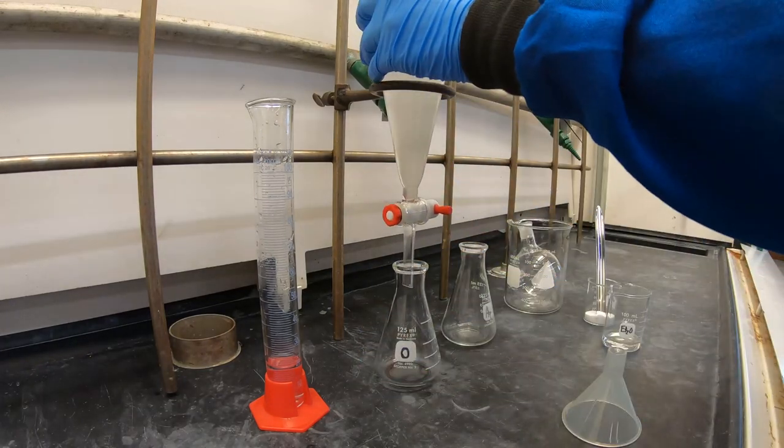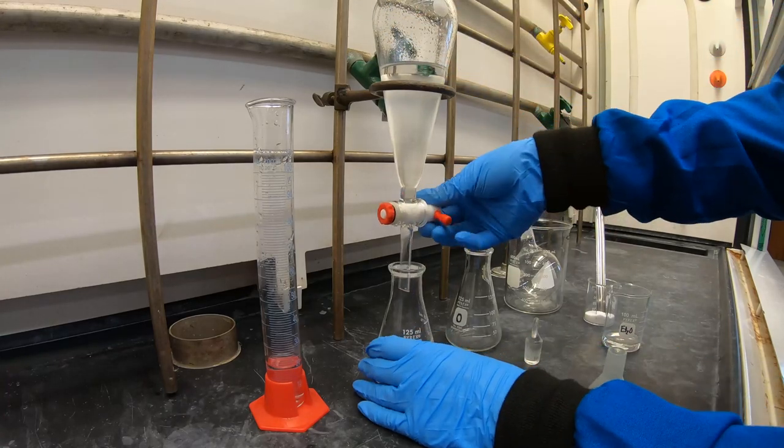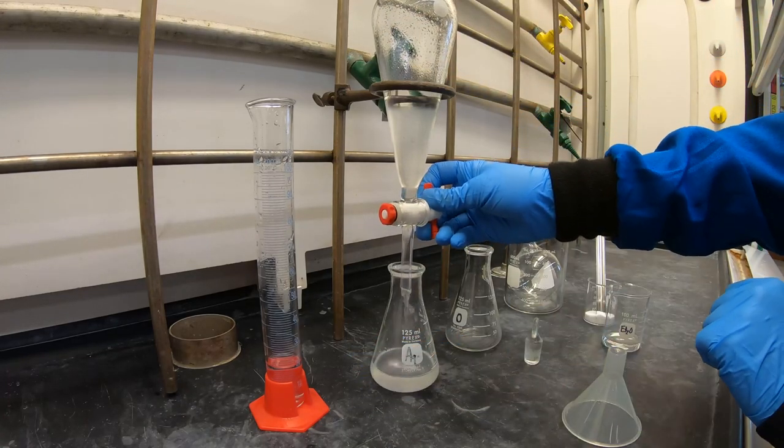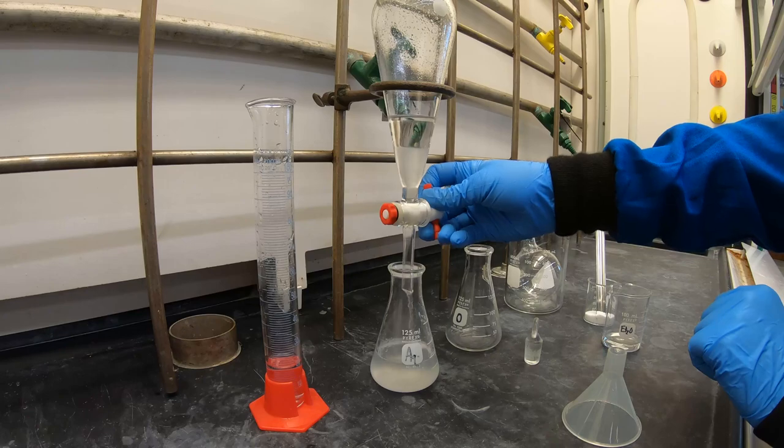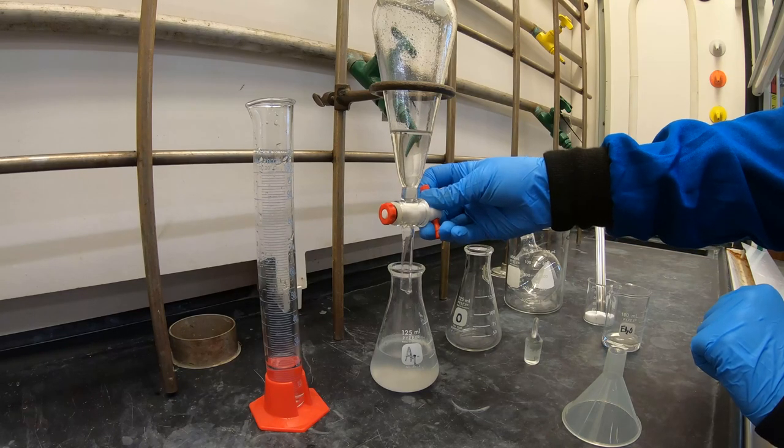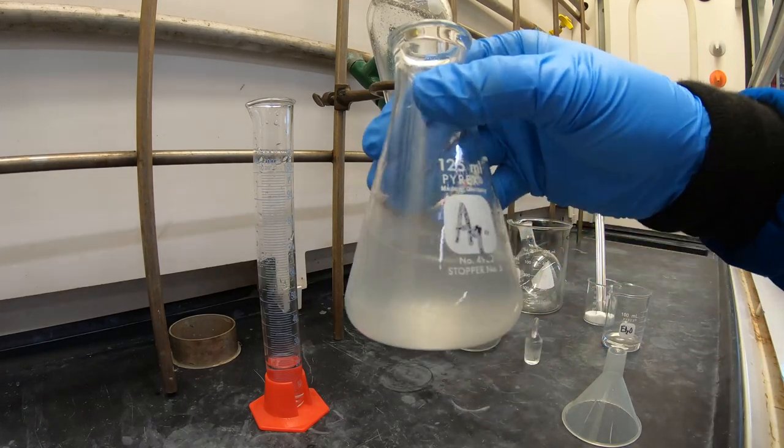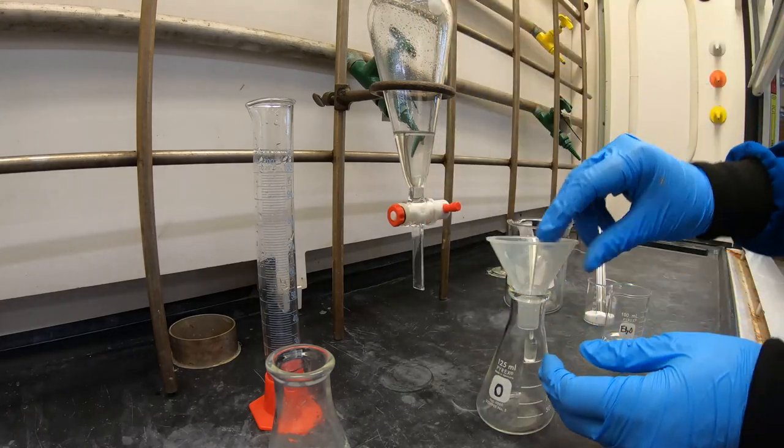You'll recall that the density of ether is lighter than water so the ether layer is on top and you'll notice this as a yellow hue. Now you need two Erlenmeyer flasks, one labeled for your aqueous layer and another for the organic layer.